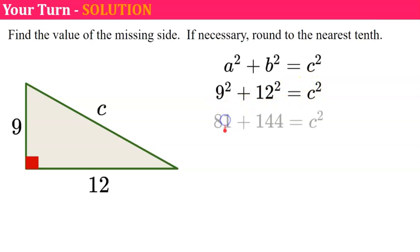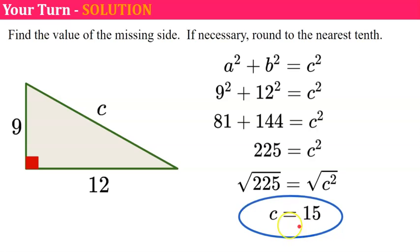9 squared is 81 and 12 squared is 144. Now let's add 81 and 144. I get 225 equals c squared. Let's take the square root of both sides and the square root of 225 is 15. So my missing side length is 15.